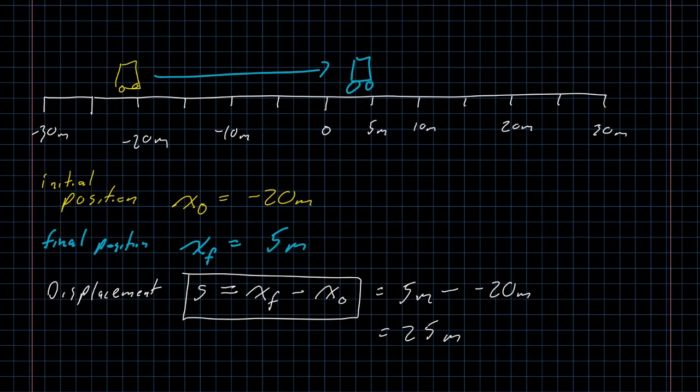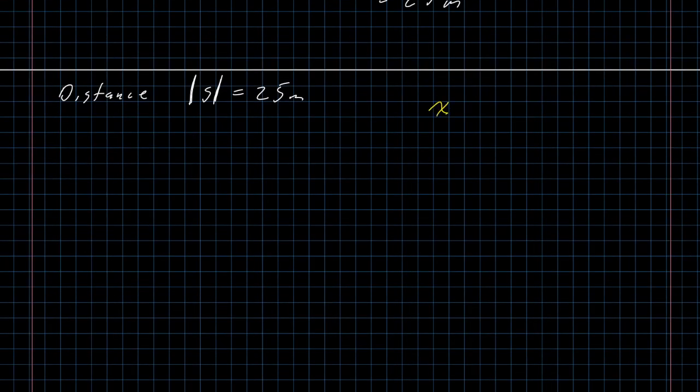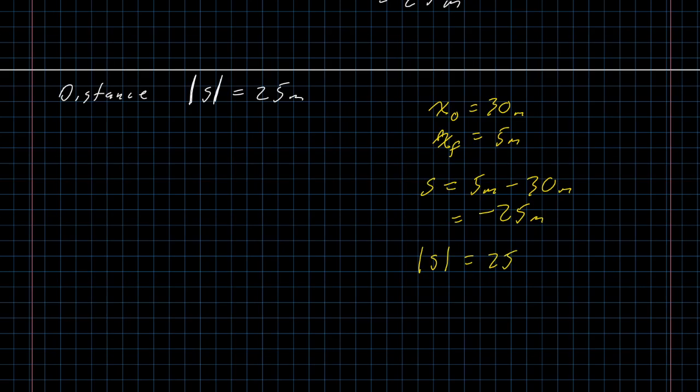Coming back up to my track for a moment. A positive displacement means going from the left to the right. If we were going the other way, if we had started with our cart way over here at 30 meters and gone back to 5 meters, well, in that case, x-naught was 30 meters. X-final was 5 meters. And, our displacement would be 5 meters minus 30 meters, which is negative 25 meters. But, the distance we traveled, absolute value of s, is still 25 meters.